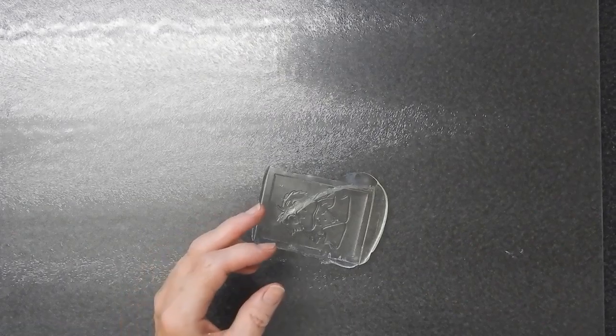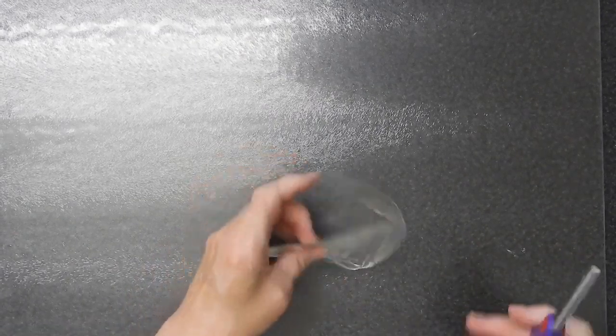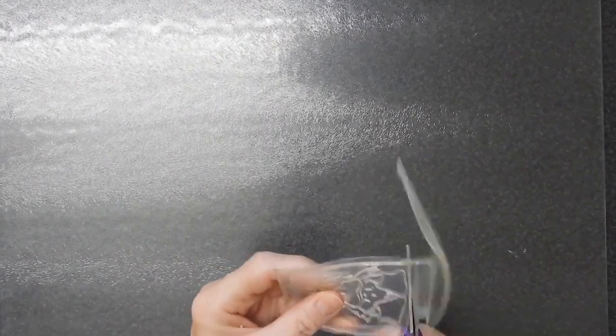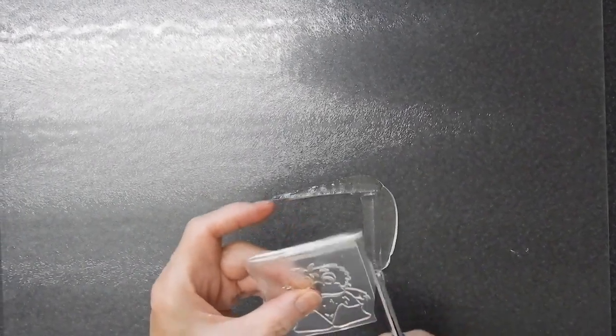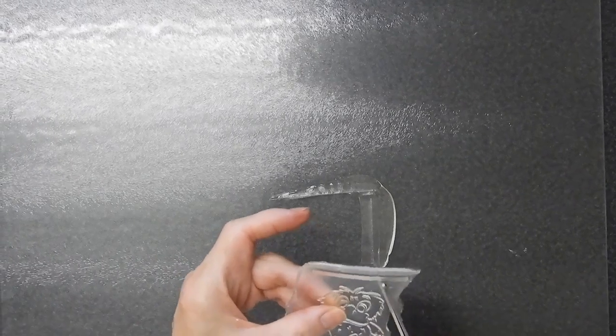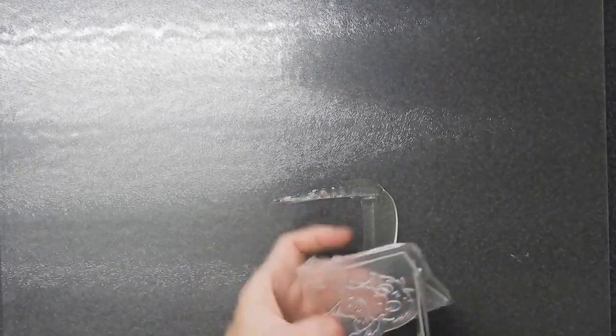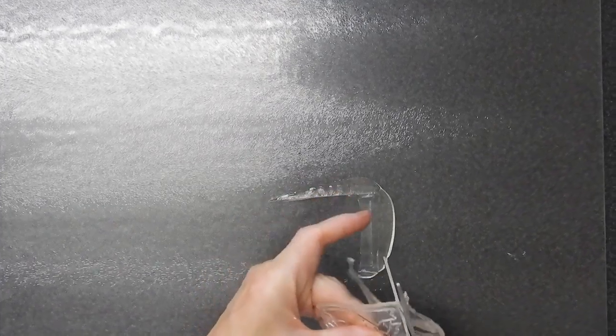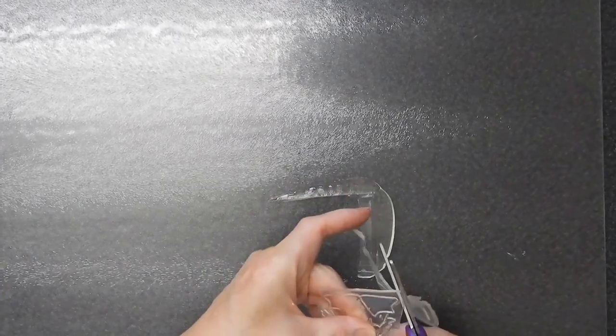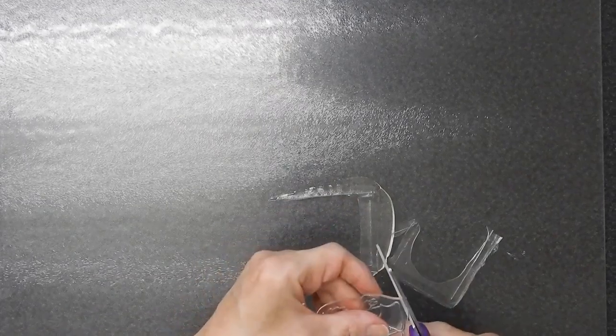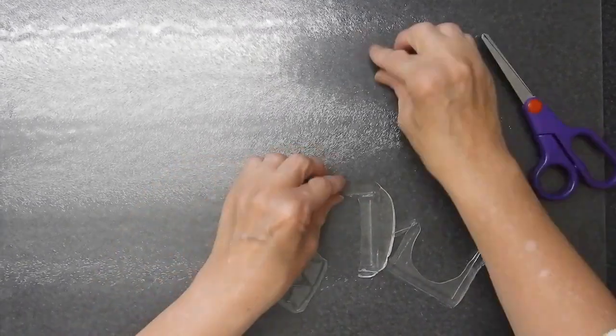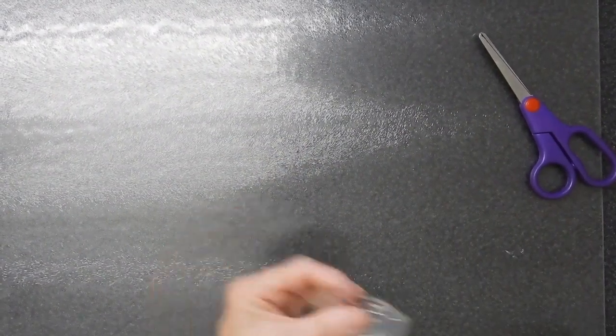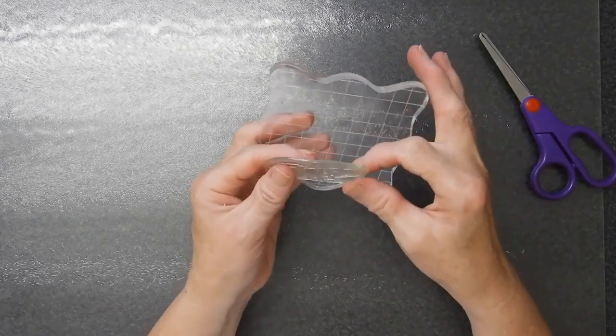And then all you need to do is cut off any excess that you want to get rid of. I don't take too much care in cutting around my stamps. Just give them a little bit of a border and just round off the edges a little bit. There we go. That'll do.